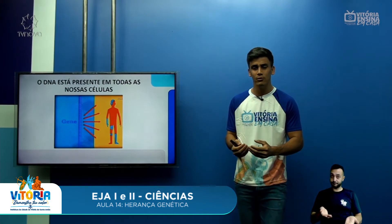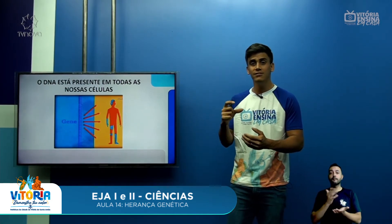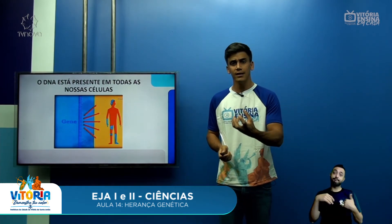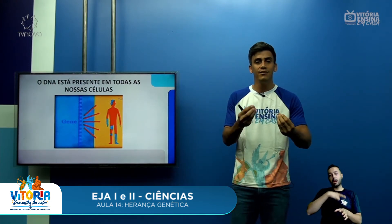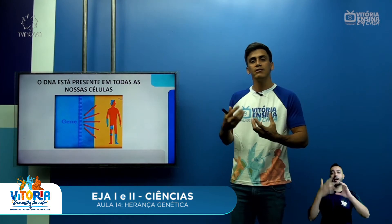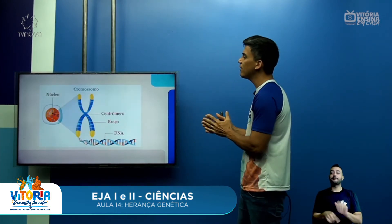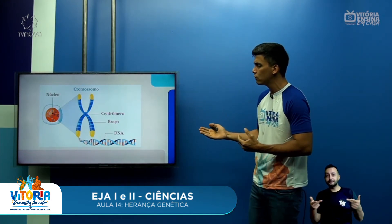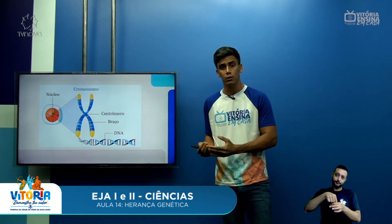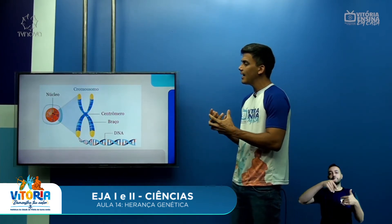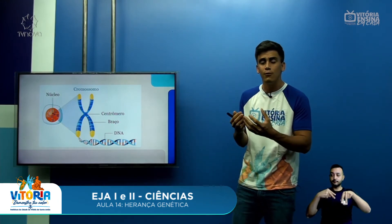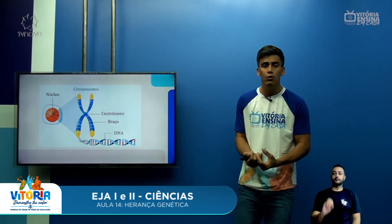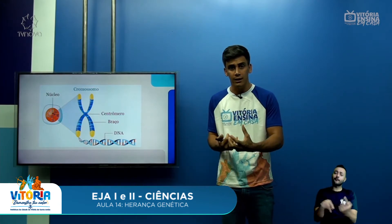Nesse DNA, nós vamos ter fragmentos — partes desse DNA que vão constituir o que nós chamamos de genes. São nesses genes que vão possuir a informação que vai delimitar as características que nós iremos apresentar. Se a gente for analisar a estrutura do nosso material genético, ele vai estar lá no núcleo. Quando esse DNA está compactado, ele vai formar uma estrutura que nós chamamos de cromossomos. Um cromossomo é composto por DNA e por algumas outras proteínas.